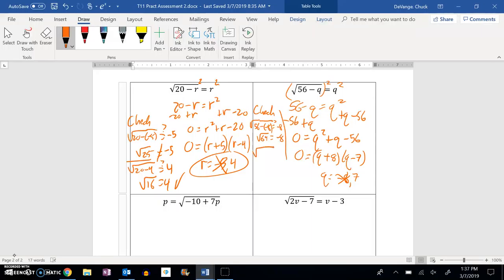And then let me plug in the 7 and see if it works. 56 minus 7. Does that equal 7? Square root of 49 does equal 7. Yeah, that works. So Q is 7.